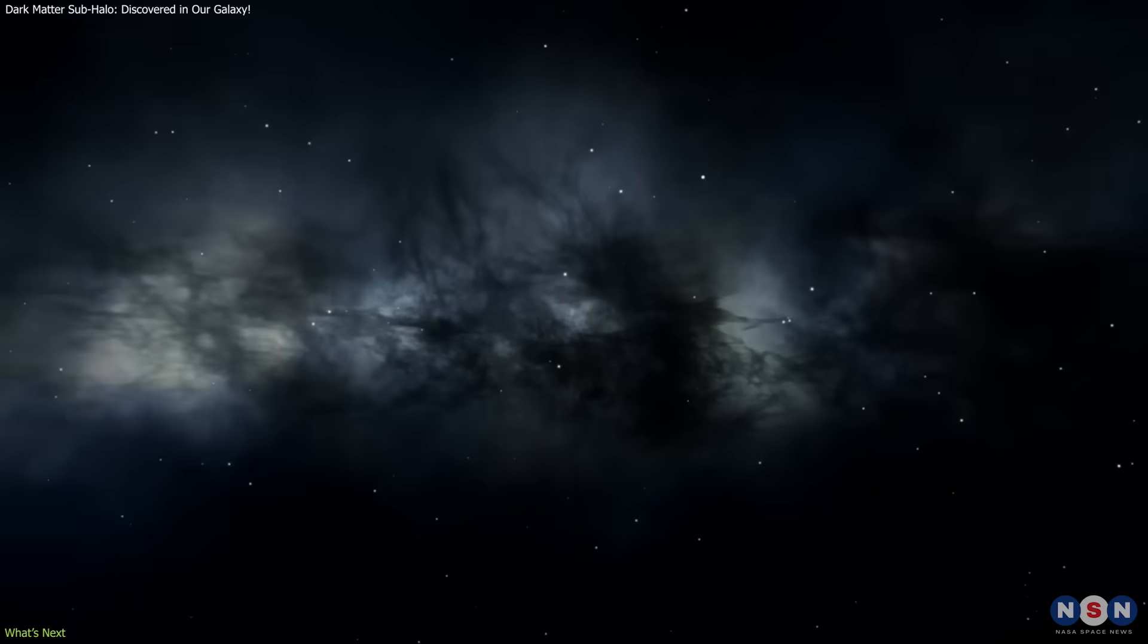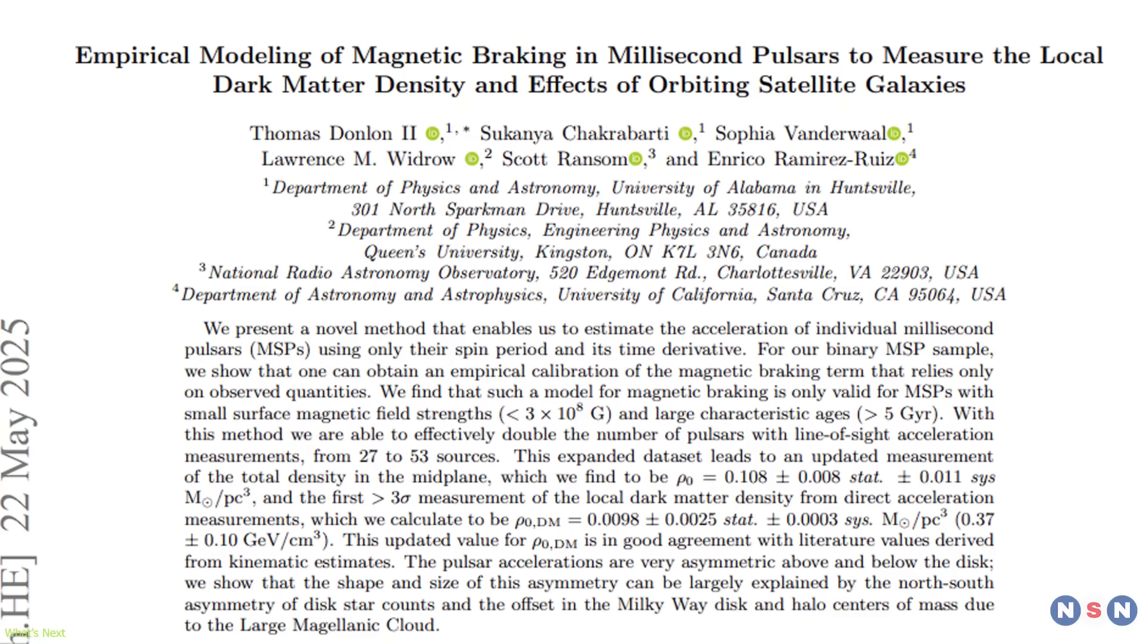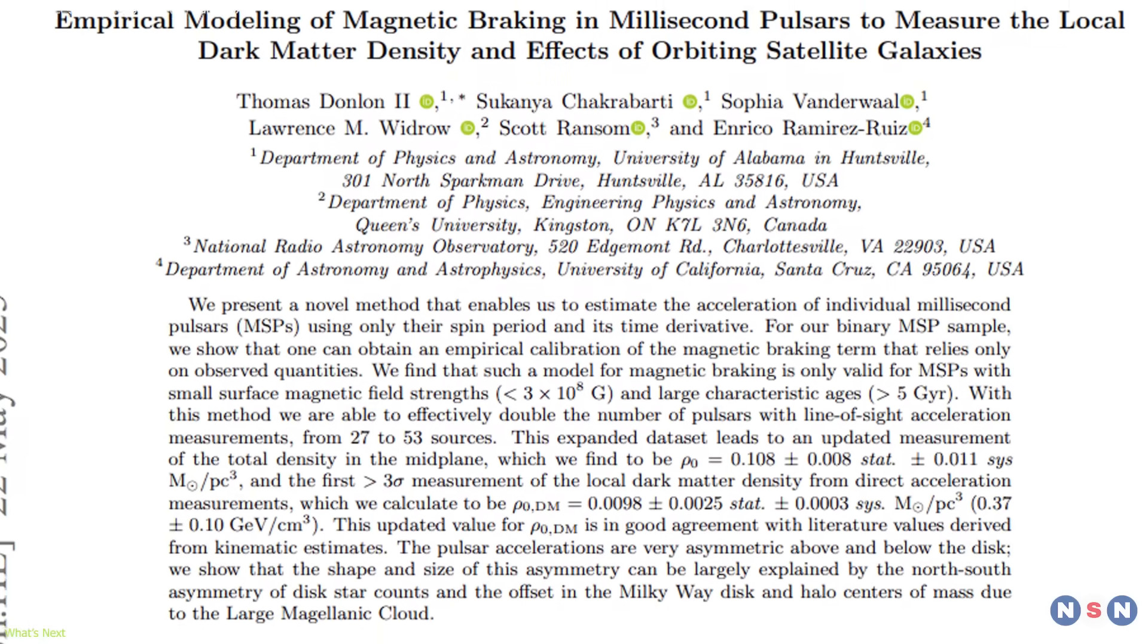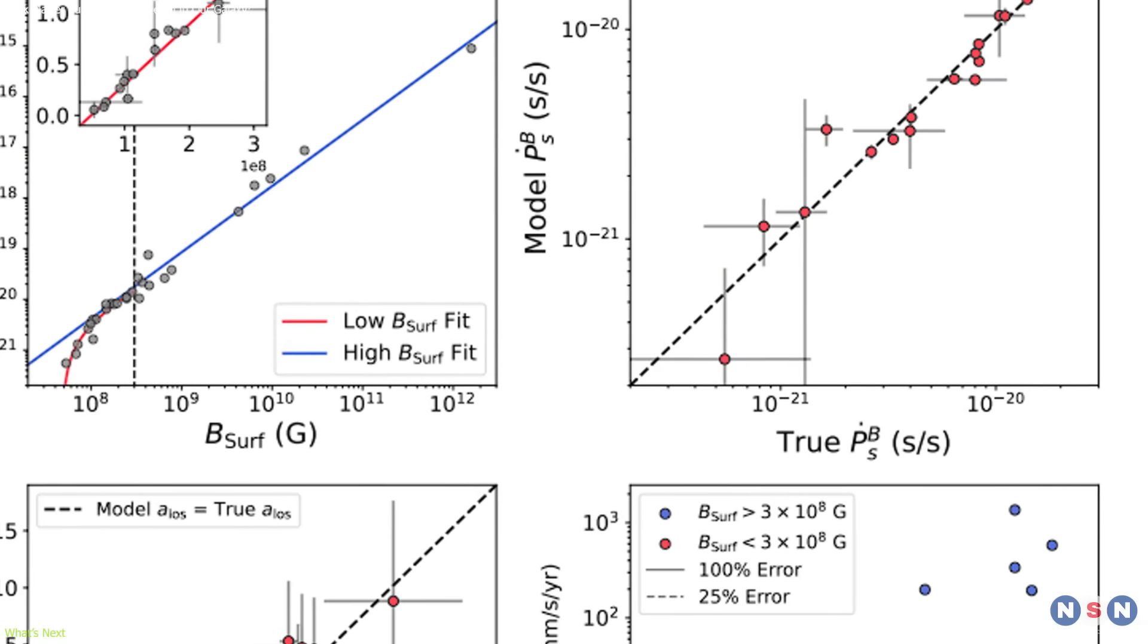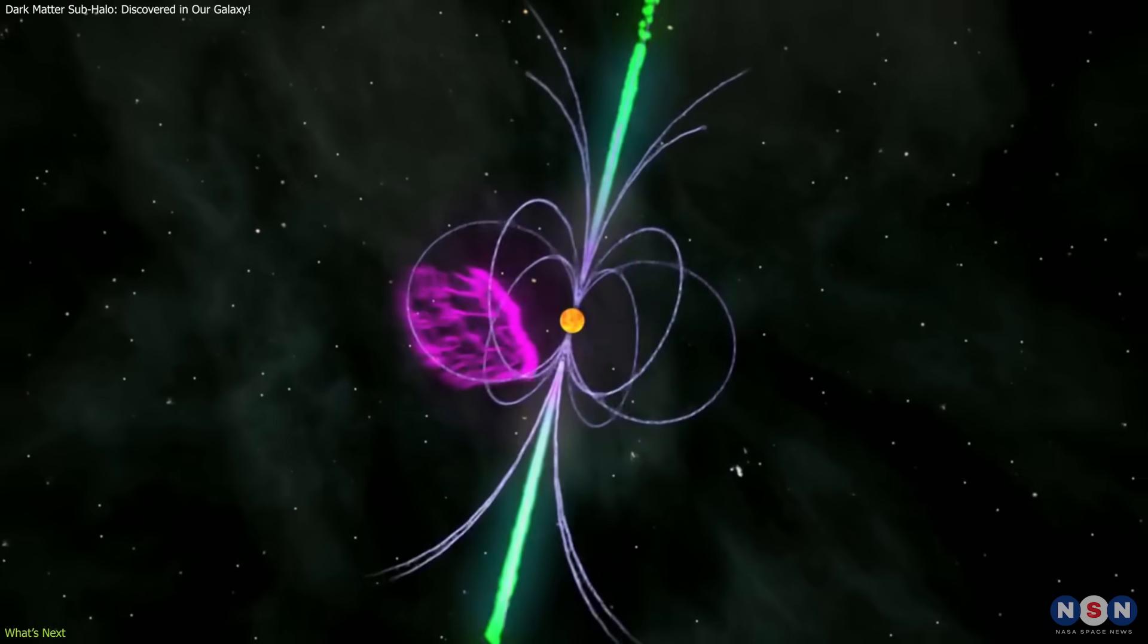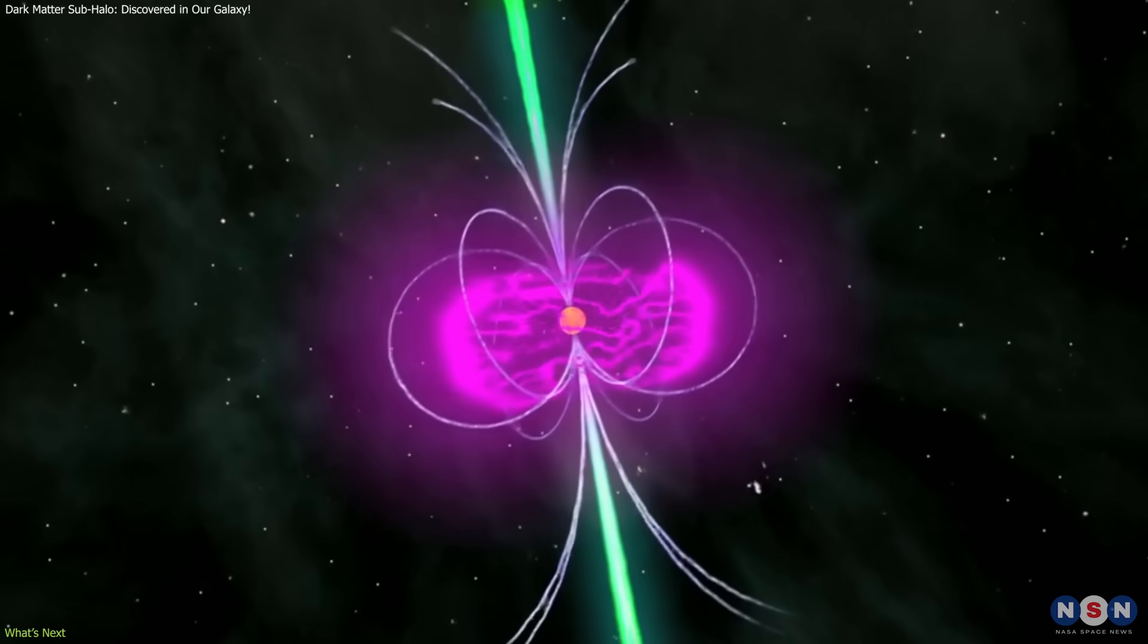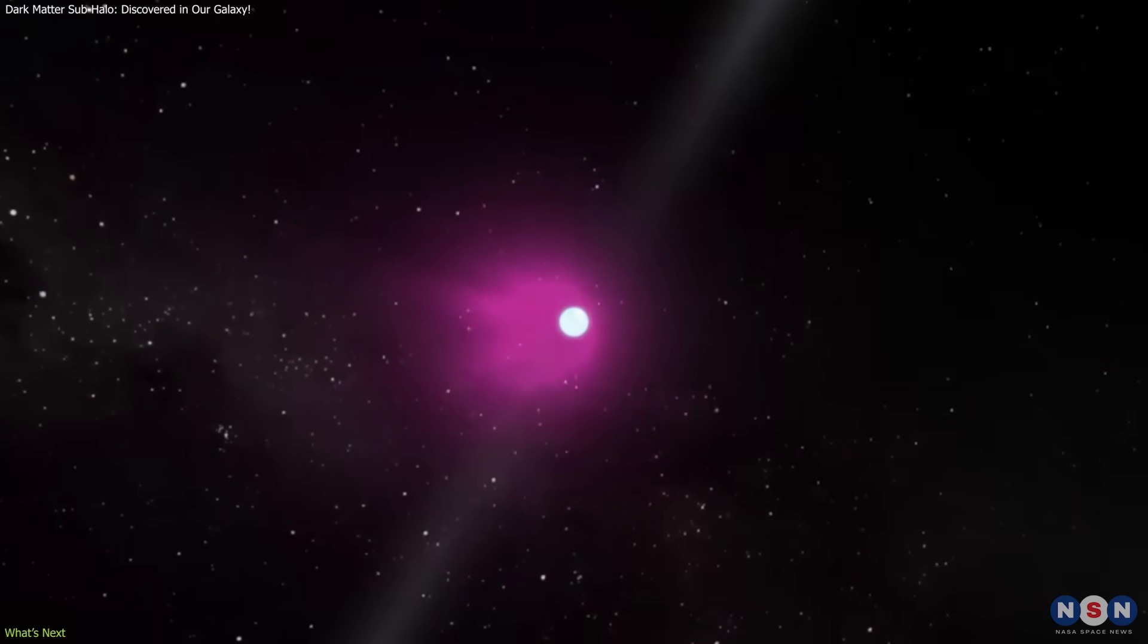While the result is exciting, it is still preliminary. The paper has been posted as a preprint and awaits peer review. Independent groups will need to test whether the signal holds up under scrutiny, and whether other pulsars show consistent anomalies. The good news is that this is only the beginning.